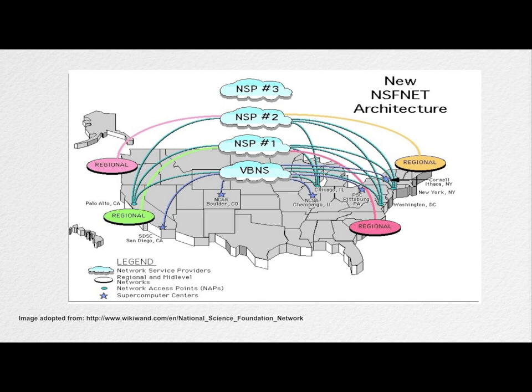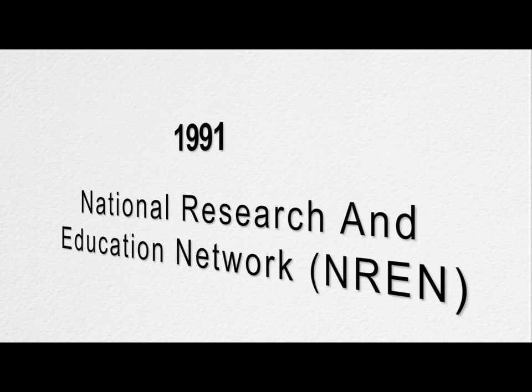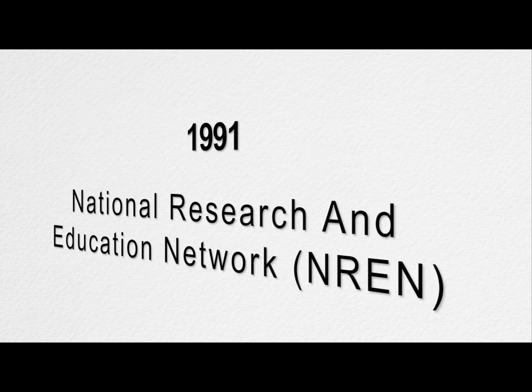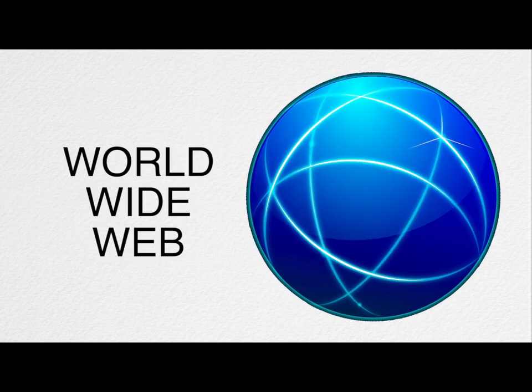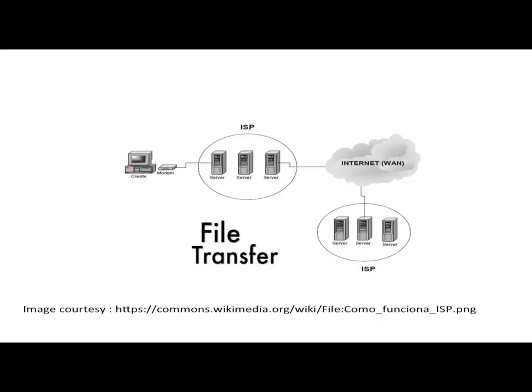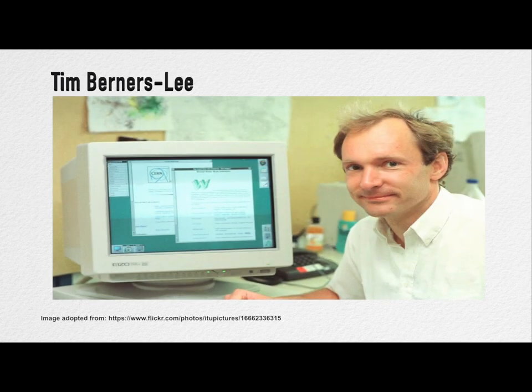More and more universities and research centers throughout the world were connected to it. This network was very popular among the research community, and in 1991, the National Research and Education Network, known as NREN, was founded and the World Wide Web was released. Initially, the role of the internet was only limited to file transfer. The credit for the internet as we see it today goes to Tim Berners-Lee, who introduced the World Wide Web. With the advent of WWW, there was a transformation in how the network was used.